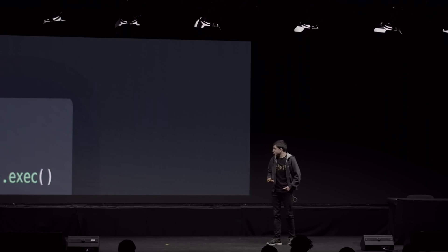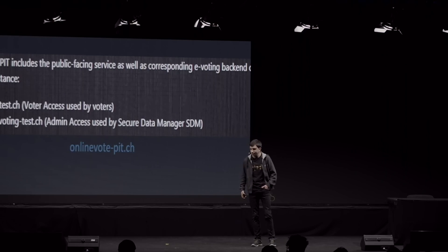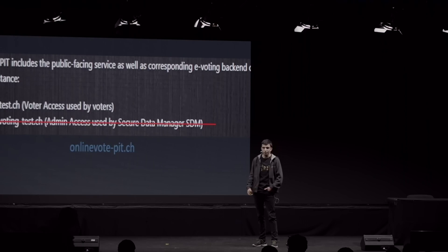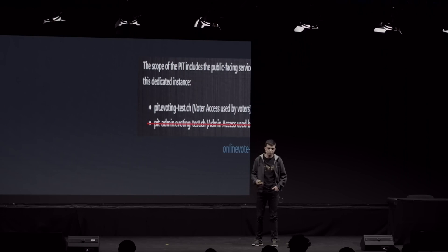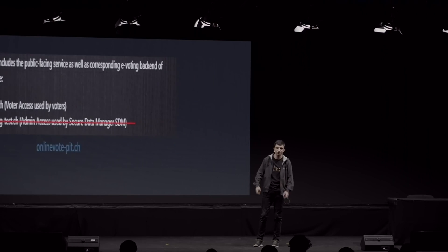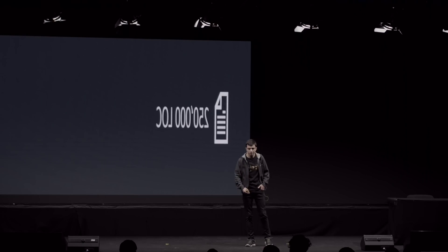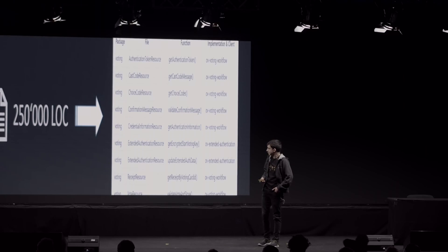This was around the time when the actual public intrusion test started. You were provided with two URLs to test: the voting workflow and the administration workflow. However, you could only test the voting workflow — the administration workflow required certificate-based authentication, and they didn't provide those certificates on purpose because it wouldn't be realistic. So all that was left was the voting workflow, which brings us to the PIT scope. We started out with around a quarter million lines of code, put it through a public intrusion test, and got this: nine REST endpoints. That was the PIT scope.